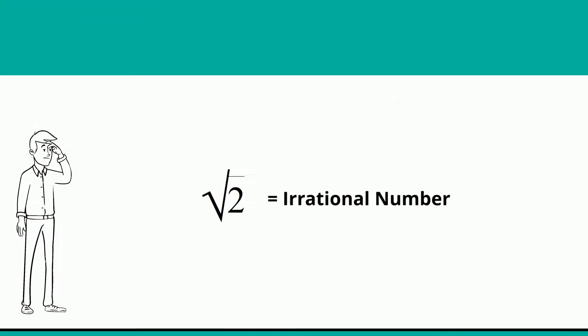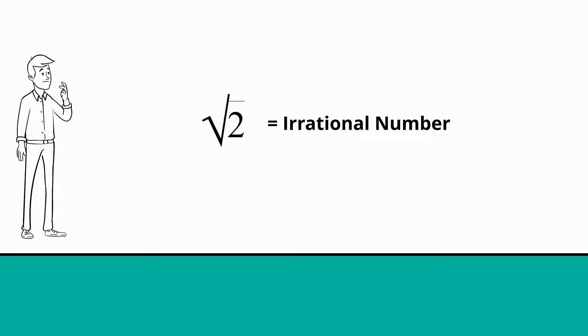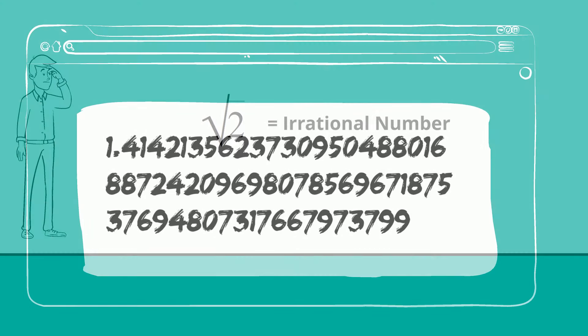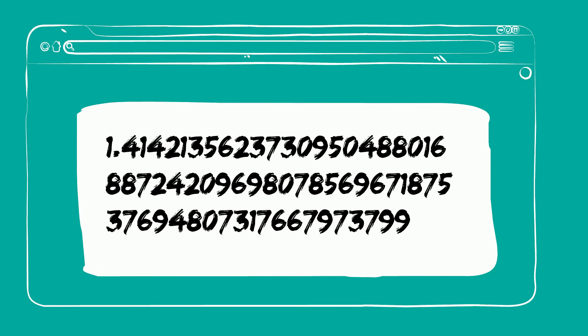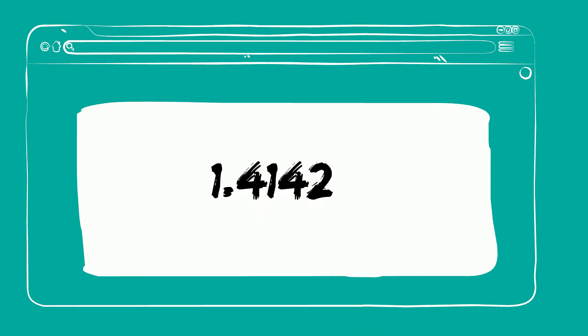The square root of 2 is an irrational number. Here it is written out to 65 places. But remember, it will continue on forever. But most of the time, you should be okay using just 1.4142, but remember this is an approximation.